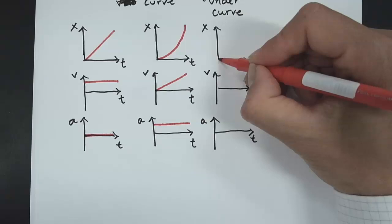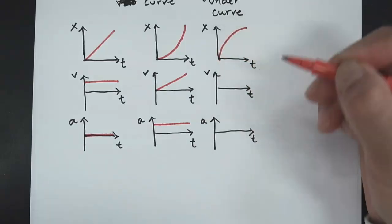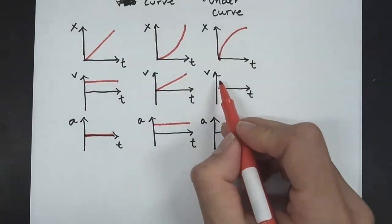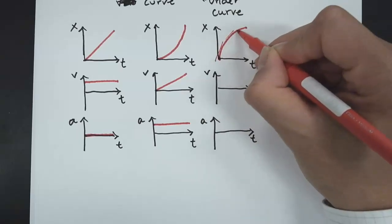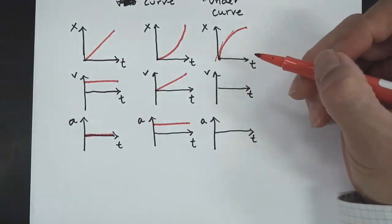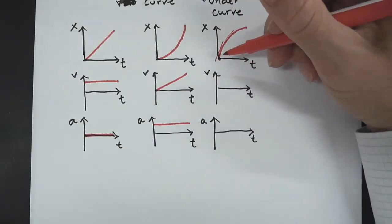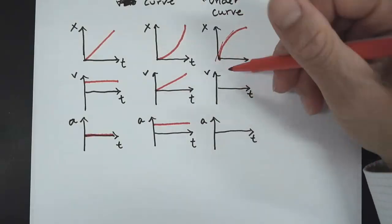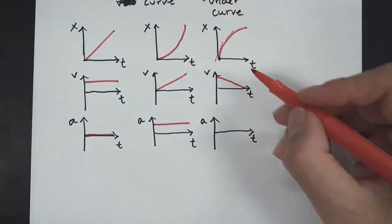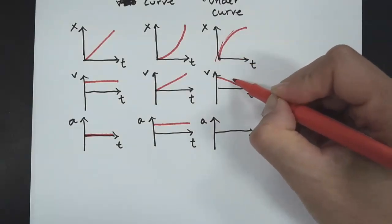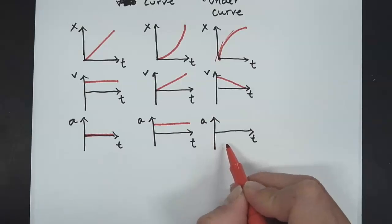Now let's take a look at an object that is slowing down in the positive direction. The slope is getting less and less steep — it's starting out with some velocity and decreasing to zero. Notice the slope is positive, so velocity is positive. But this is a negative slope on the velocity graph, so this is going to be a negative acceleration.